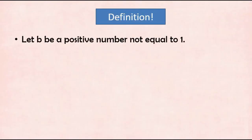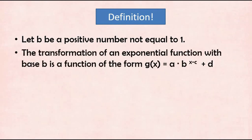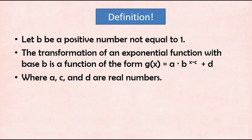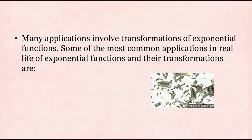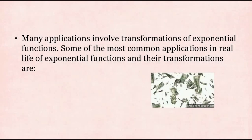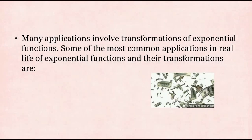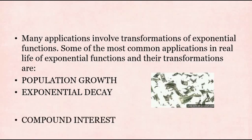Definition: Let b be a positive number not equal to 1. The transformation of an exponential function with base b is a function of the form g(x) = a · b^(x−c) + d, where a, c, and d are real numbers. Many applications involve transformations of exponential functions, including population growth, exponential decay, and compound interest.